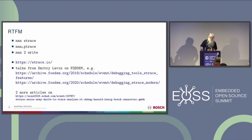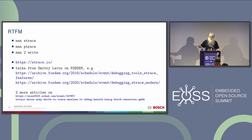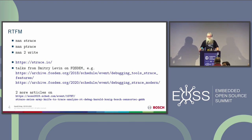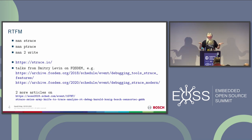Strace is built on the ptrace system call. This is what the Linux kernel and also other Unix systems offer as a debugging port - so that some debugger can control another process. That's process tracing. With that, you can stop a process, single-step it, set breakpoints and all these things. Strace also uses it. Strace stands for system call trace - it's interfering in the call from your program at user level to the kernel. This is the POSIX API, so you see all the POSIX calls: how you open a file, read a file, make network connections.